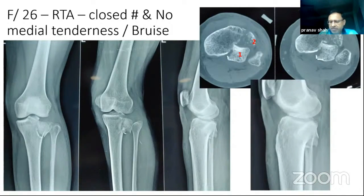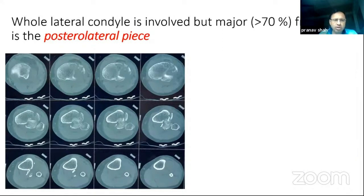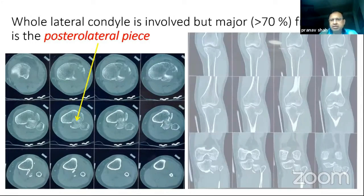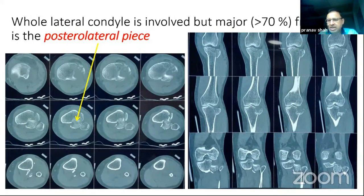The posterolateral looks to be a bigger fragment. If we observe the lateral X-ray more closely, we can see that the articular surface has depressed such that the joint surface is facing anteriorly — it is probably 70 degrees rotated. On the coronal CT scan, the major fragment is the posterolateral piece, which accounts for approximately 70% of the lateral condyle. The coronal sections also confirm the posterolateral fragment is significantly large.